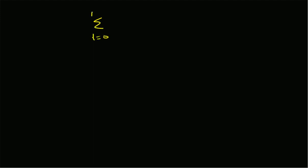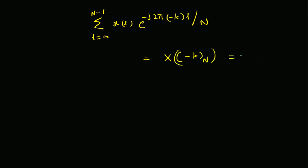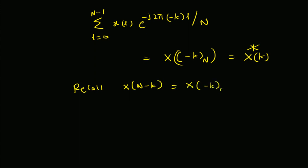The expression simplifies to summation from l=0 to N-1 of x[l] times e^(-j2π(-k)l/N). This definition is x[-k mod N]. It is also equal to X[k] conjugate, because the exponential here is the conjugate of the standard DFT exponential, so this is indeed X[k]*.